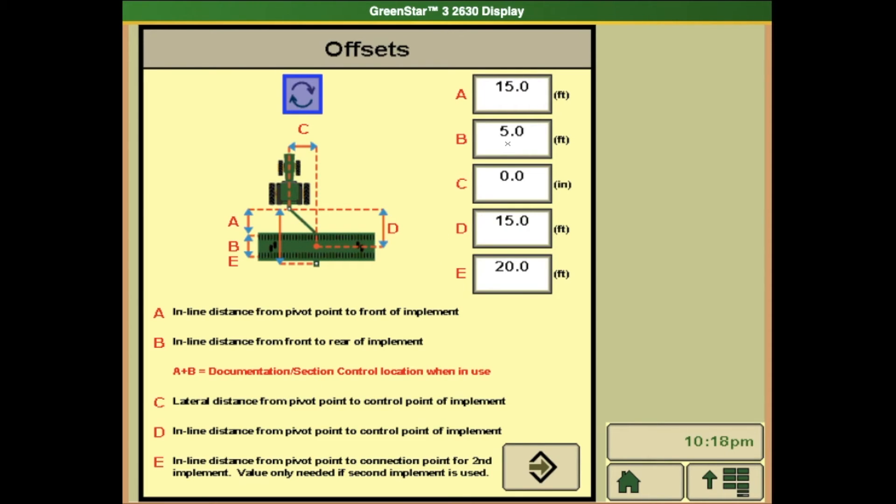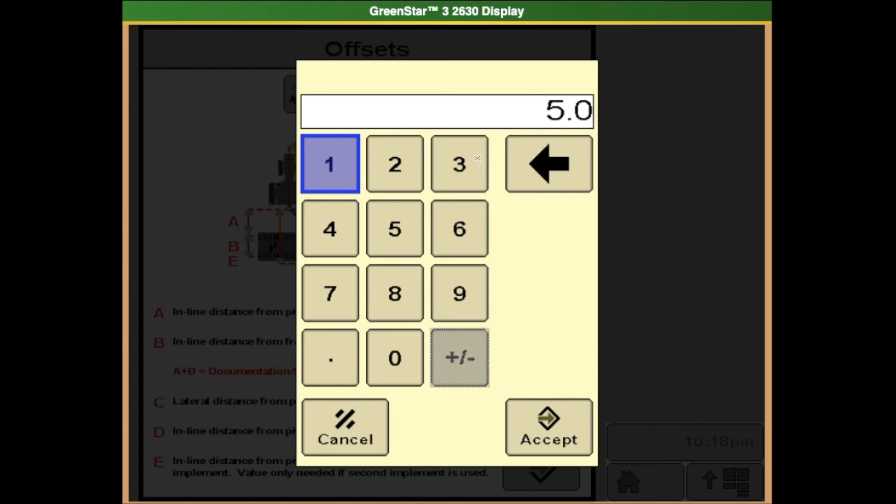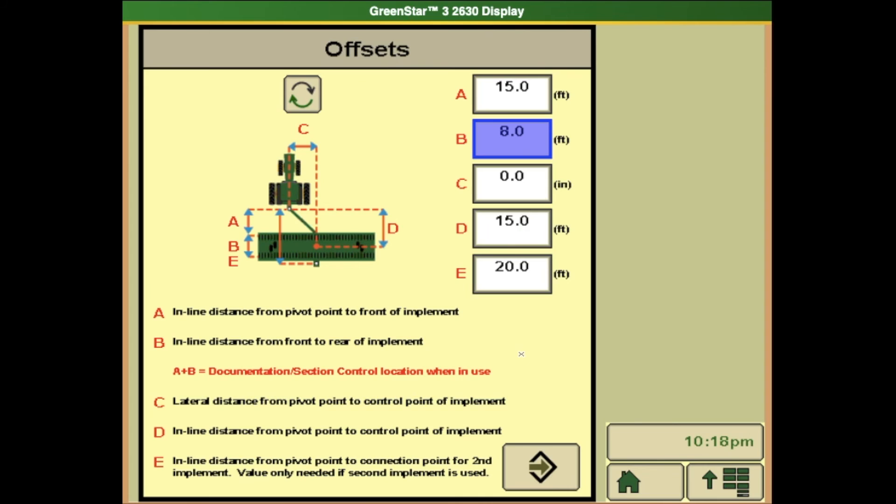Say one of our measurements is incorrect, letter B. Instead of 5 feet, it needs to be 8 feet. Select the box and then enter 8 for 8 feet. Make sure you hit accept so it saves to the offsets page.